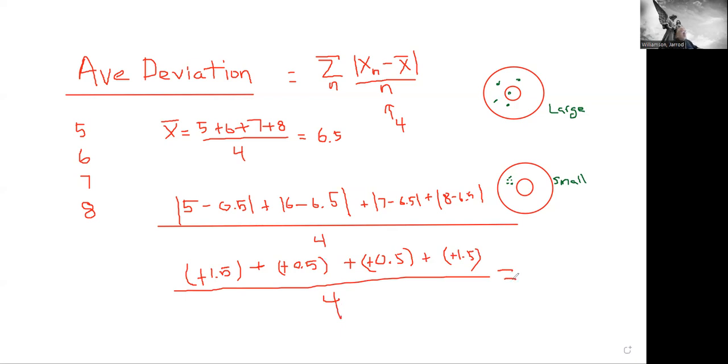And let me get my calculator out. So 1.5 plus 0.5 plus 0.5 plus 1.5 gives me 4. 4 divided by 4 gives me an average deviation of 1. Okay?